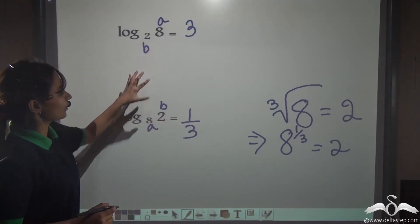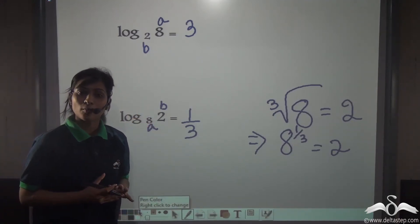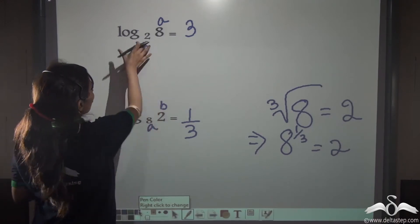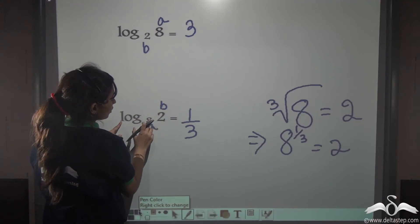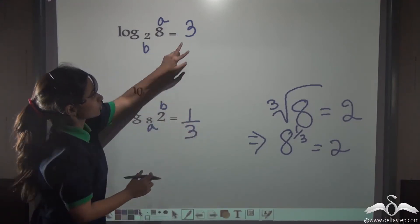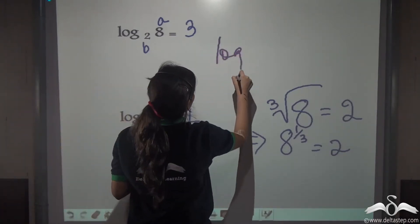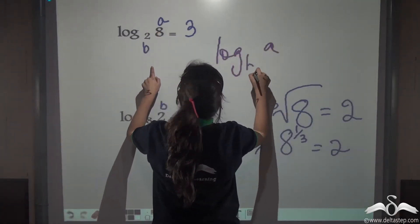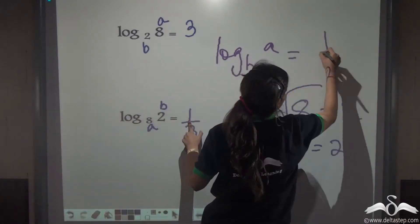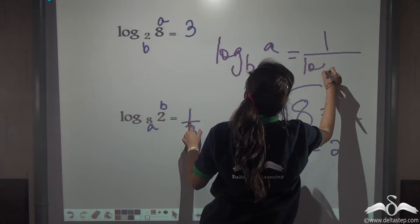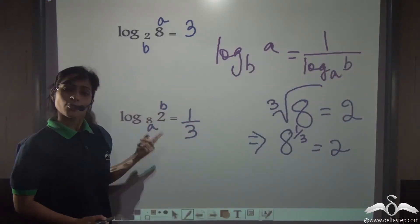Do you see the relation here? The reciprocal formula says the answer is 1 by the original. Log 8 to the base 2 is 3, and log 2 to the base 8 is 1/3 — you get the reciprocal of what you were getting before. That means log A to the base B equals 1 by log B to the base A. This is proven.